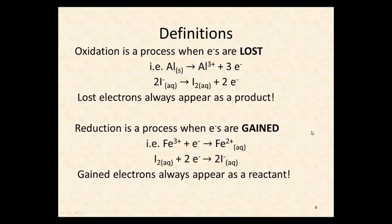Now let's define these processes. Oxidation is a process where electrons are lost. So here we've got aluminum and aluminum is going to lose three electrons to become the aluminum cation. So our three electrons come off here. We've lost electrons and this is called oxidation. Similarly, iodide here has lost two electrons to become iodine. This is also oxidation. So lost electrons here means that it appears as a product. So if the electrons are on the right-hand side of the equation, then we've lost electrons. We have oxidation occurring.